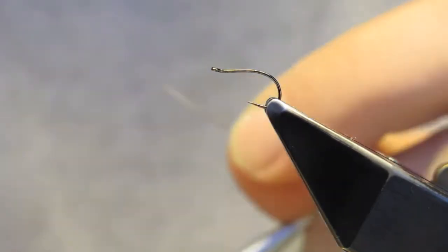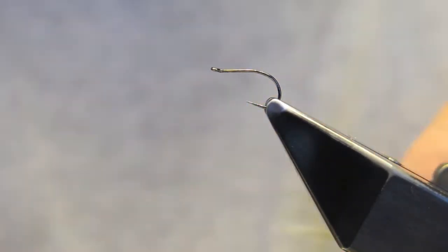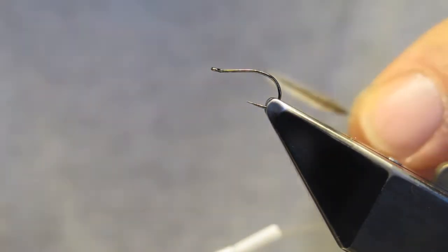This will be a nondescript soft hackle wet fly. The main reason for doing this fly is to illustrate how to do the abdomen and the ribbing using one strand of flash material.